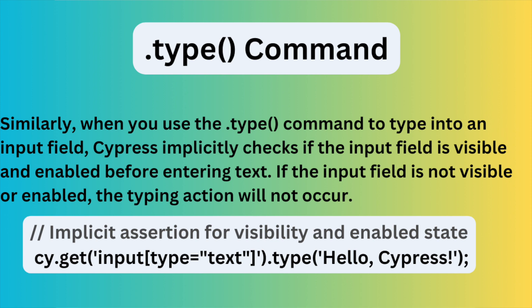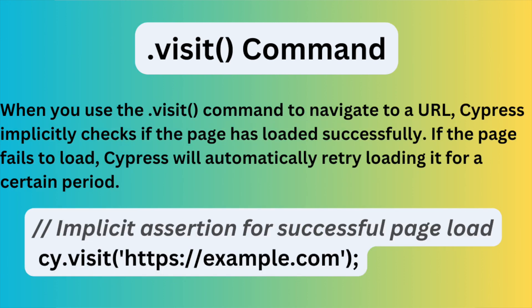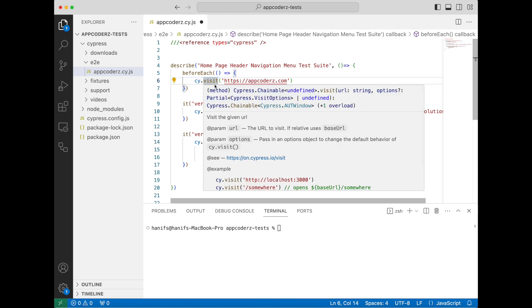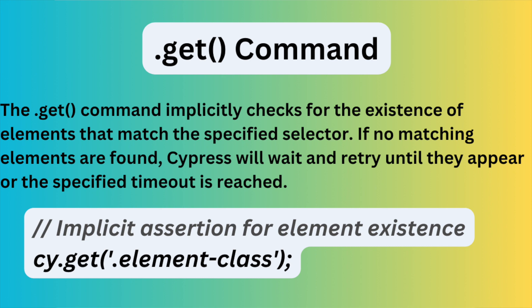Here's another example: `.select`. When using the `.select` command to select options from a dropdown, Cypress implicitly ensures that the dropdown element exists and is visible before selecting an option. Another example is `.visit` — when you use the `.visit` command to navigate to a URL, Cypress implicitly checks if the page has loaded successfully. If the page fails to load, Cypress will automatically retry loading it for a certain period. And the last example — the famous `.get` command. The `.get` command implicitly checks for the existence of elements that match the specified selector.